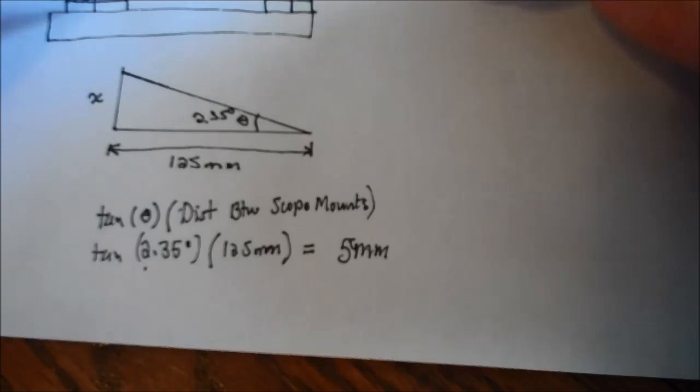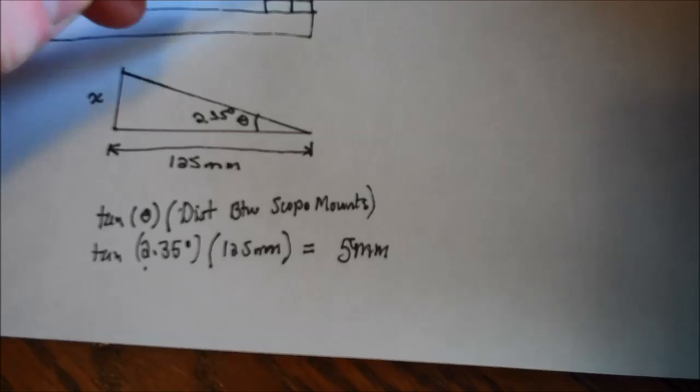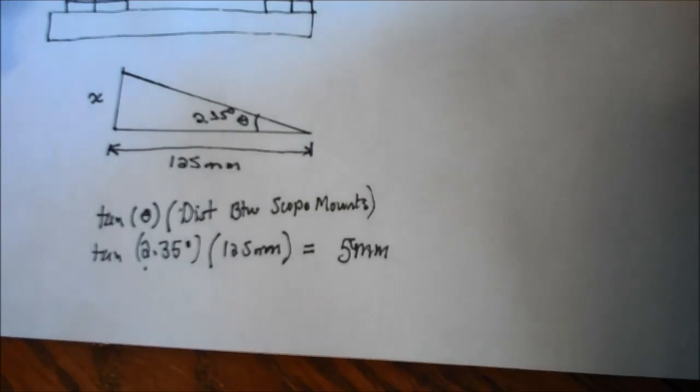So if you move, let's say you have a few millimeters of rise in the back, the back's a few millimeters higher than the front. If you move those scope mounts closer together, you'll get more of an angle from that. And then if you move them further apart, you'll get less of an angle. So you can kind of fine-tune it with the distance that the scope mounts are from each other to get a little bit closer to that exact 5 millimeters.